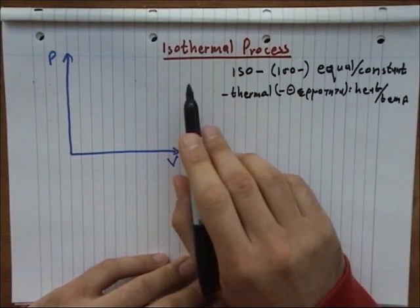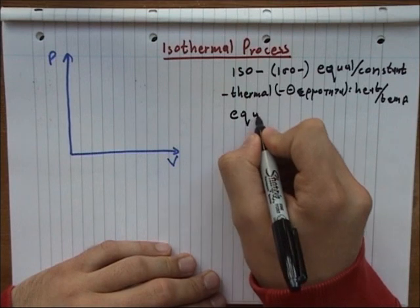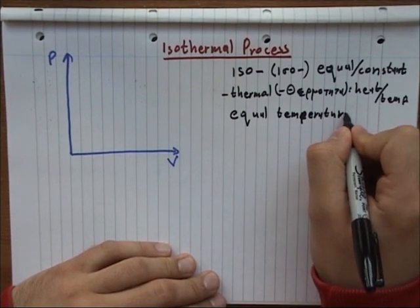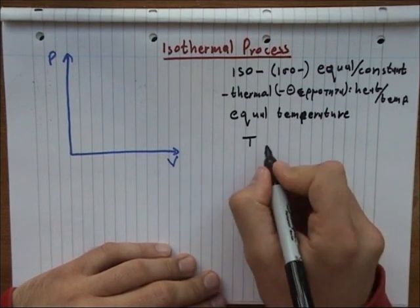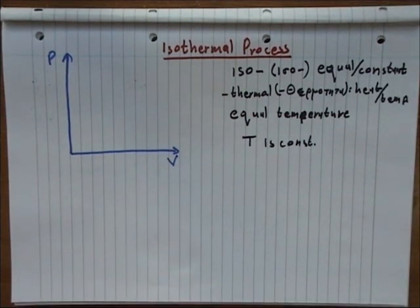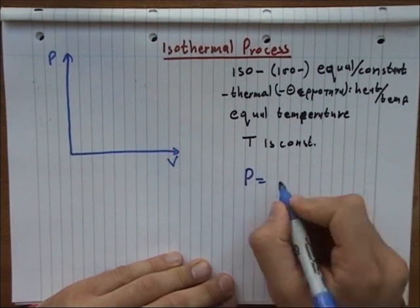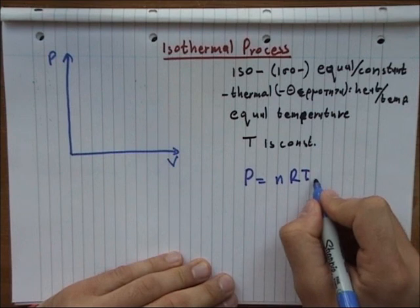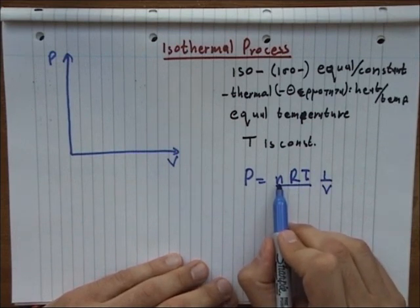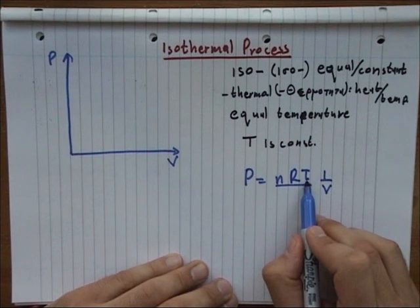So what does an isothermal process mean? It means we have an equal temperature across the whole process, so T is constant in this case. Our universal gas law becomes P equals nRT times 1 over V. This is constant because the amount of mass, the amount of moles of the gas, is constant. This is constant, this is constant, and the temperature is constant.